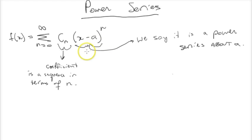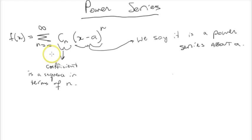You name a power series based on what the a is. So you say it's a power series about a, about 1, about 2, something of that ilk. Another important thing to note is a power series, unlike a lot of the other series we were dealing with, starts at n equals 0 instead of n equals 1. That's a convention that mathematicians use for a reason that we're going to figure out in the next video when we start talking about Taylor series and Maclaurin series.